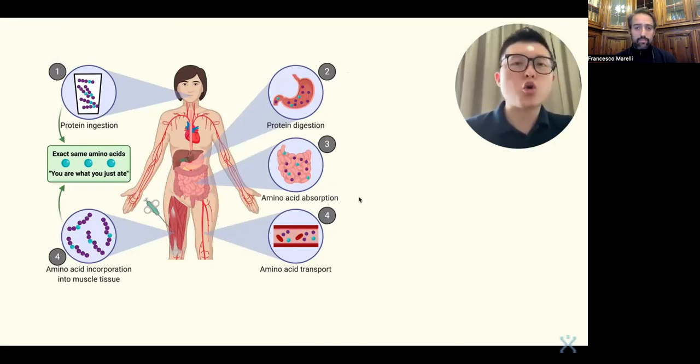Once it is absorbed into our bloodstream, it goes into stage number four, which is the amino acid transportation. This amino acid will be transported by our blood circulatory system into our vital organs. So in my case, the amino acids will be utilized by the body to build new muscle. This is called myogenesis.